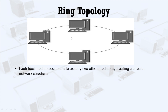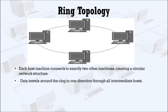We can also say that the ring topology is a bus topology in a closed loop. Suppose if we cut this connection, then this structure will look just like a bus topology. In ring topology, data travels around the ring in one direction through each intermediate host or node.